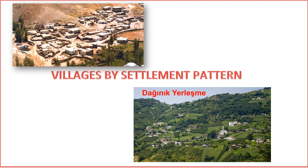Settlements where houses are far from each other are called dispersed settlements. These types of settlements, seen in places where the terrain is rugged, water resources are abundant, and agricultural areas are fragmented, are more common in the Black Sea region. In places where there is little hill and water resources are insufficient, houses are close to each other — such settlements are called mass textured settlements. These are common where houses are generally located around water wells, fountains, or religious buildings, such as in Central Anatolia and Southeastern Anatolia. The settlement formed by the random distribution of houses over large areas is called loose textured settlement, common in the Black Sea coastal zone.